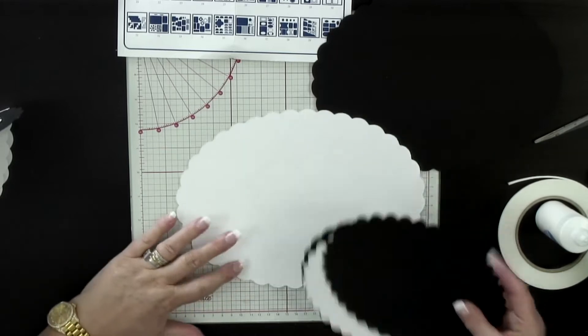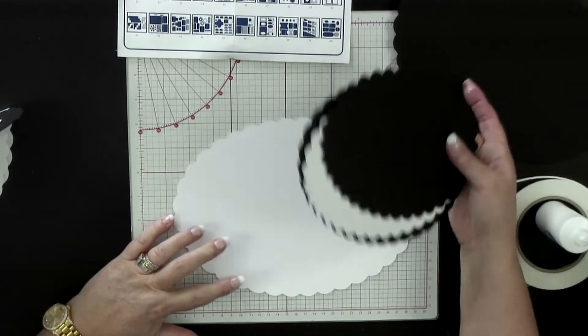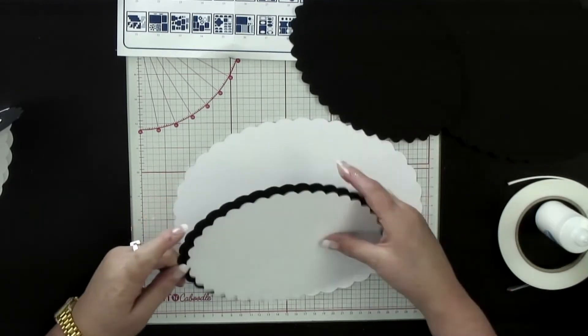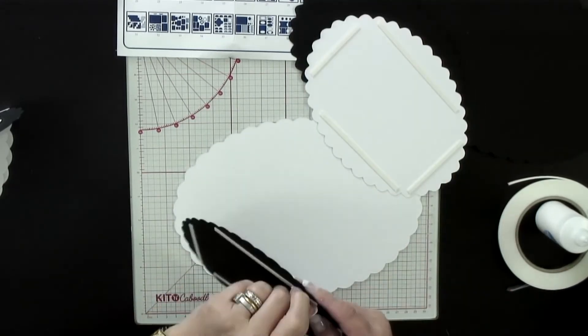So the main body of the card is going to be the white foundation. Then going to do my mats and layers and create the decoration. So let's take the back off the foam tape.